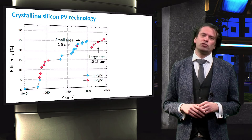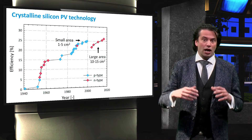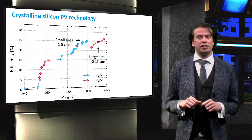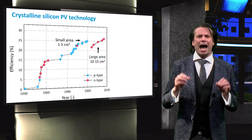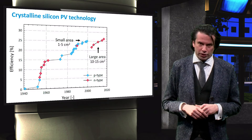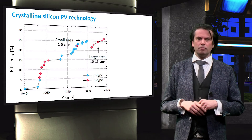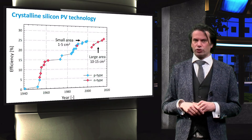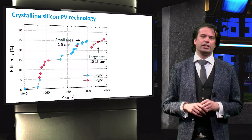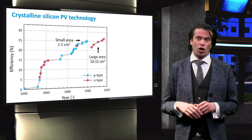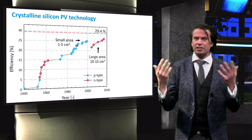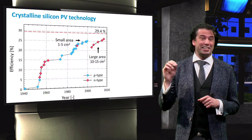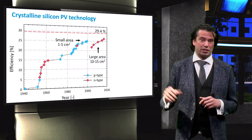Over the last 15 years, the performance of solar cells with a larger area up to 15 square centimeters has strongly increased. The performance of crystalline silicon solar cells is still steadily increasing, up to the theoretical limit of 29.4%.